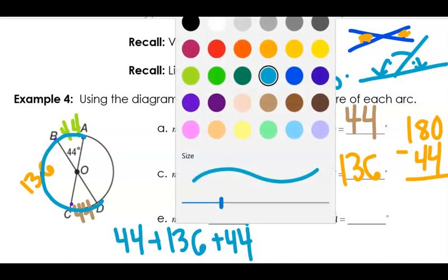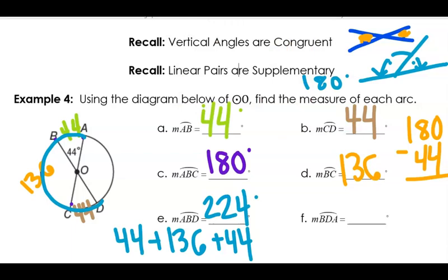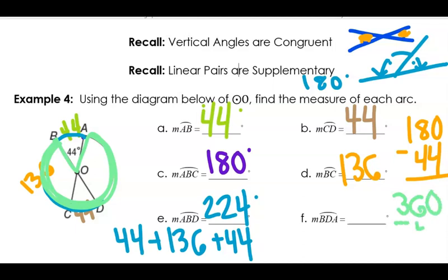Last but not least, we're trying to find arc B to D to A — from B towards D, all the way to A. So this is everything except that 44 degrees. Remember the whole way around the whole circle is 360. So I can take 360 and subtract out that 44 to get my answer here of 316 degrees. I could have figured out all the pieces and added them together, or I can subtract to figure it out.